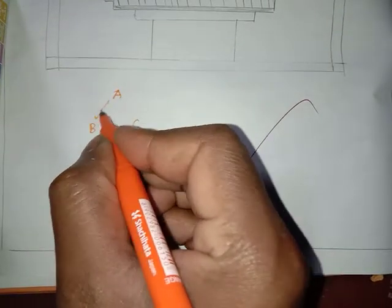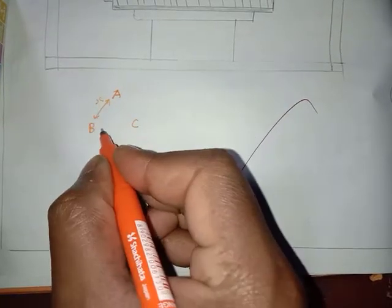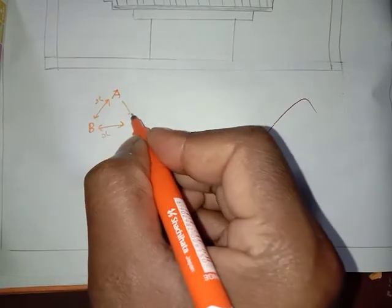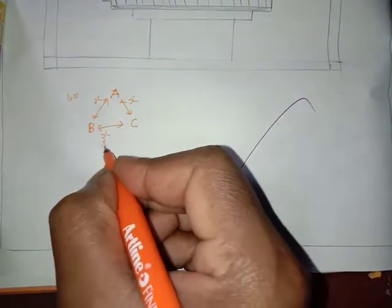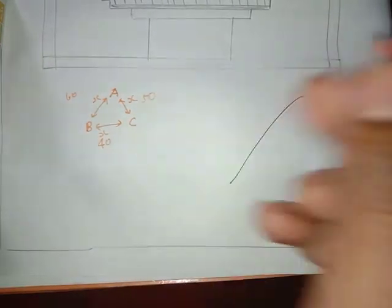Equidistance is the same. A to B is the same distance, B to C is the same distance, C to A is the same distance. 60 km per hour, 40 km per hour, 50 km per hour. Travel is the same distance.